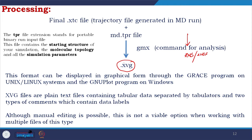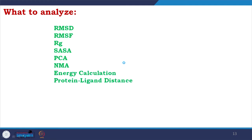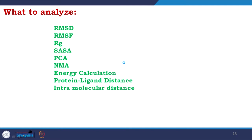You have to design your own experiment, but there are some analysis modules that people generally follow. These include: root mean square deviation (RMSD), root mean square fluctuation (RMSF), radius of gyration, solvent accessible surface area, principal component analysis, normal mode analysis, energy calculation, protein-ligand distance (which could also be protein-DNA, protein-protein, or any type of distance), intramolecular distances, and dihedral angles. Many things can be obtained from your simulation run, and we will discuss a few in detail.